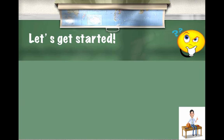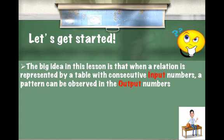This was the introduction to our lesson today. These were the things that we were going to learn. The big idea in this lesson is that when a relation is represented by a table with consecutive input numbers, a pattern can be observed in the output numbers.